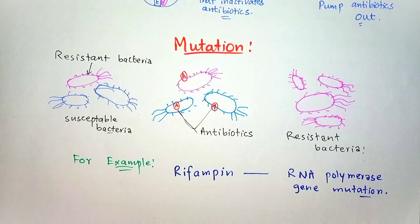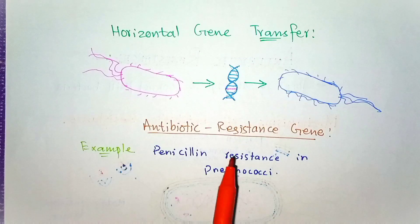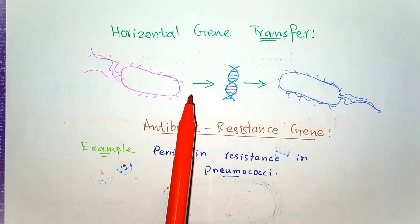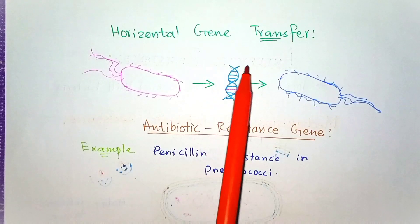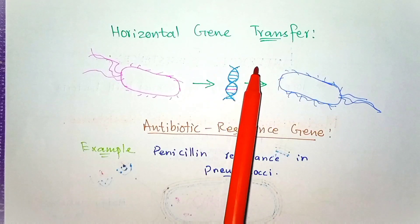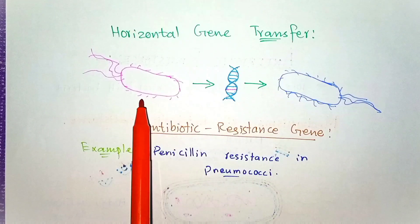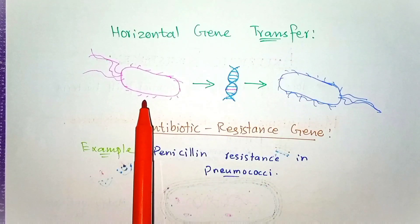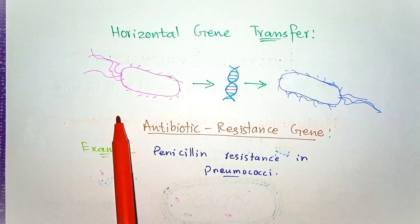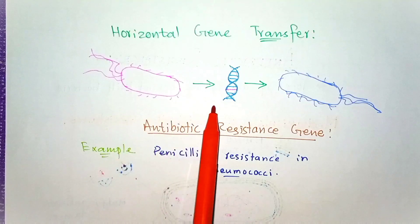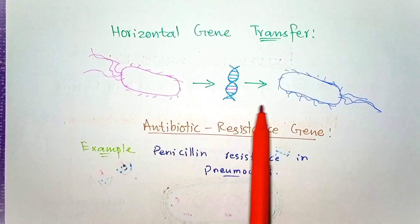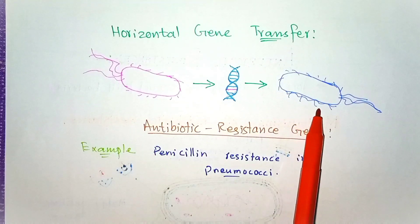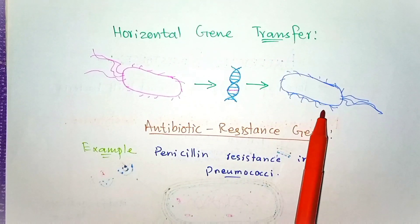The other way that bacteria acquire resistance is through horizontal gene transfer. There are three different ways in which this can occur, but in each case genetic material is transferred from antibiotic-resistant bacteria to other bacterial cells, making them resistant as well.